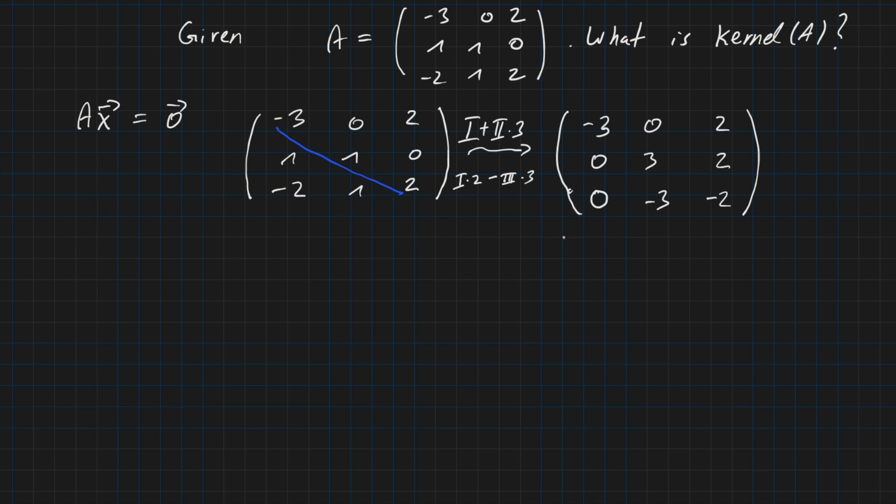And remember we need to have a one here as well. So we need to get rid of this minus three. How can we do it? We have a three already here, we just need to add those rows and then we can get a zero here.